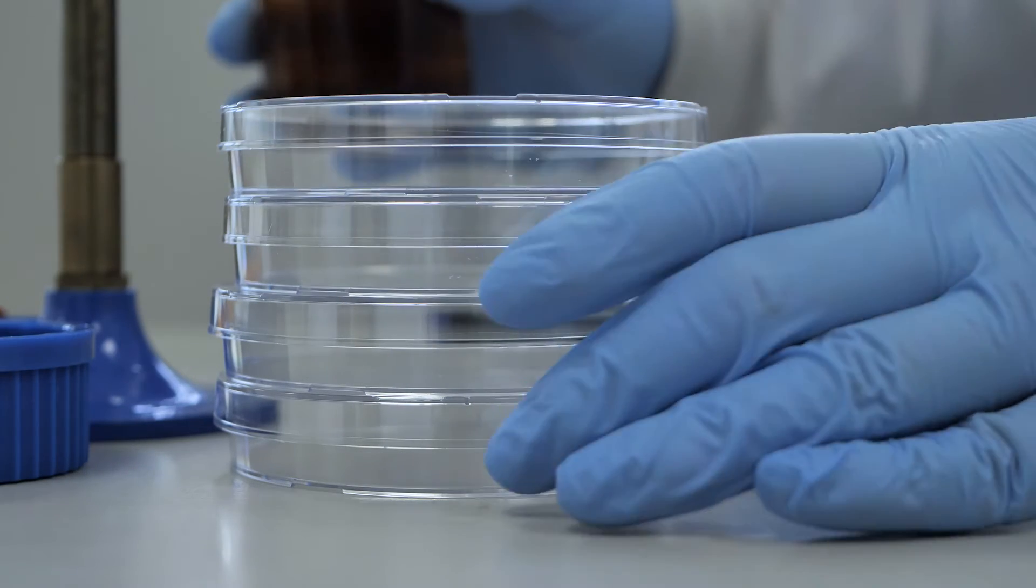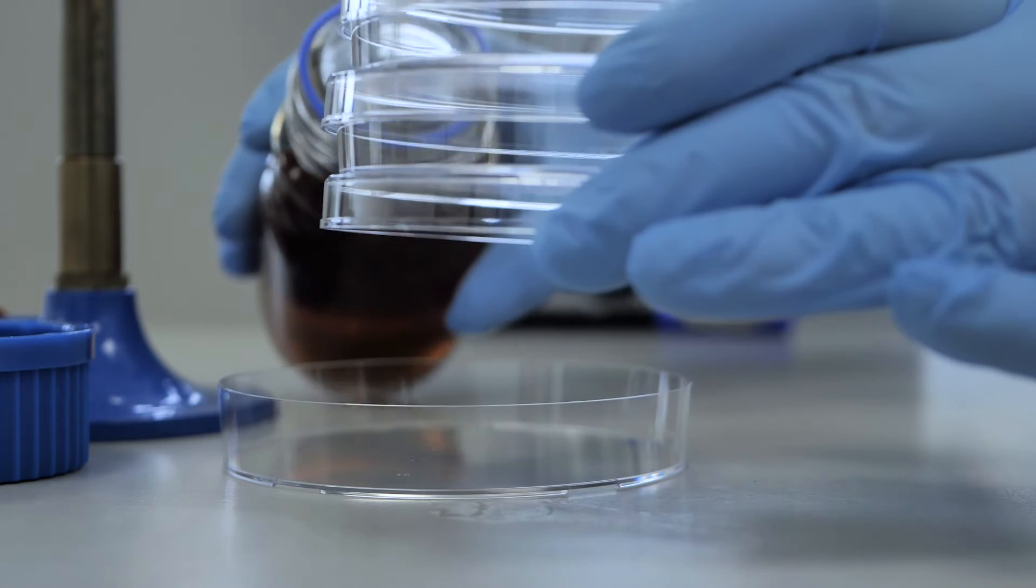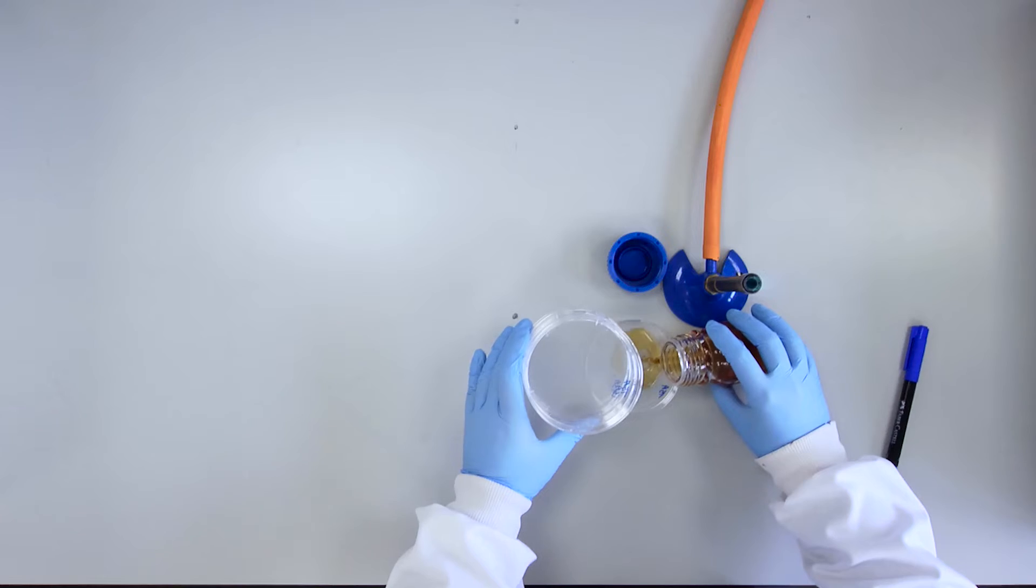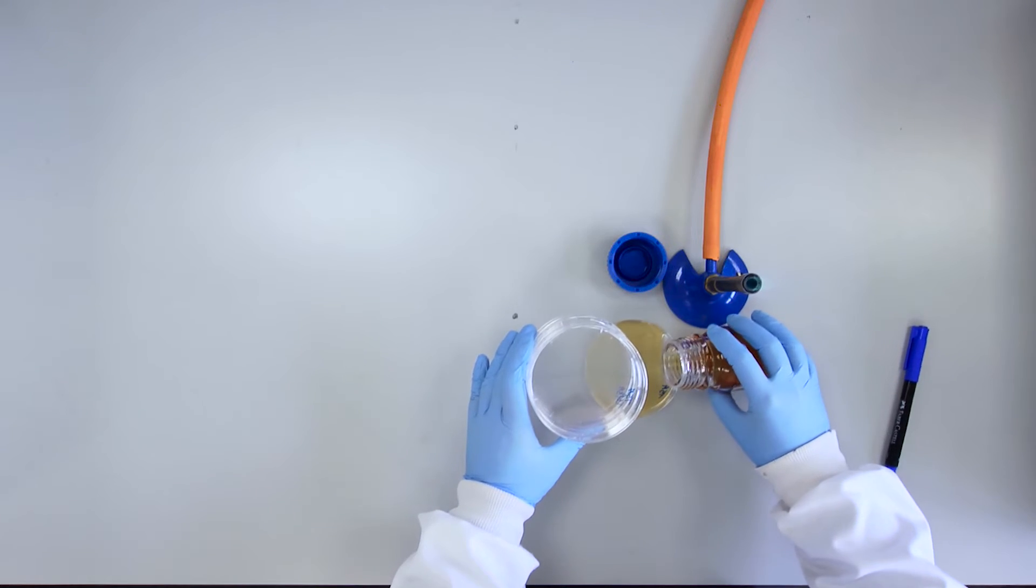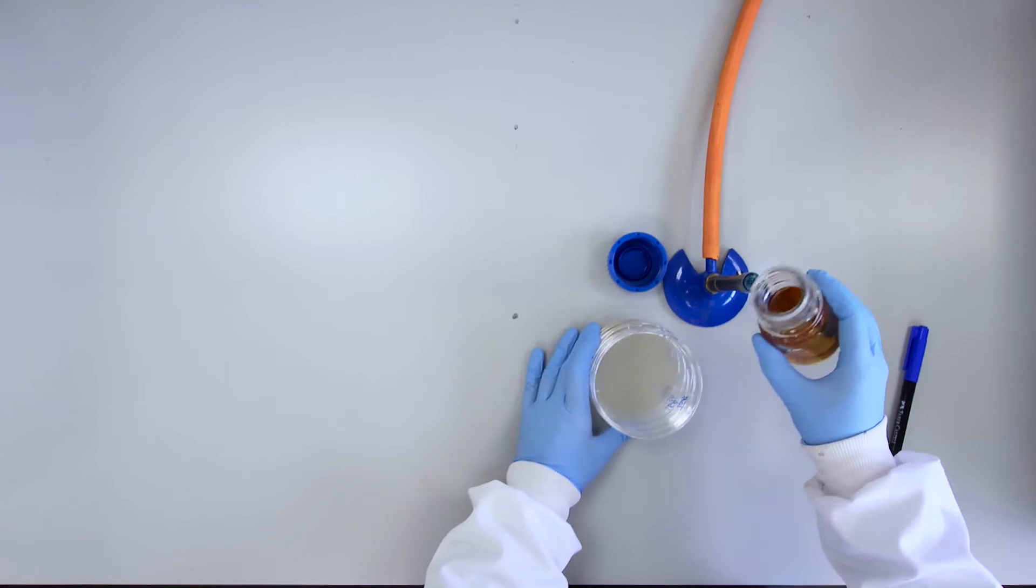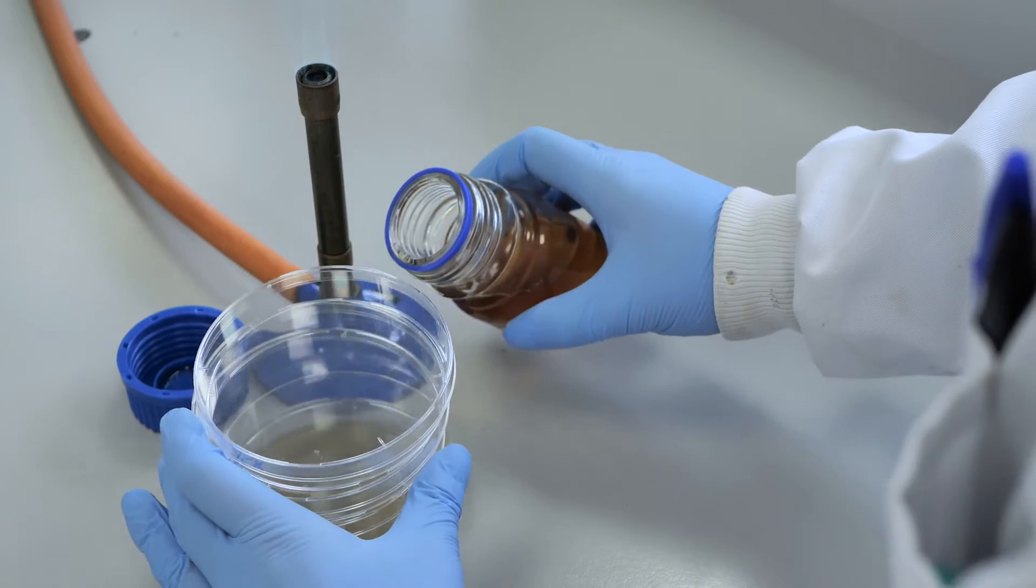Lifting the lid of the bottom plate, pour approximately 20 to 25 milliliters of molten agar into the plate. Replace the lid.